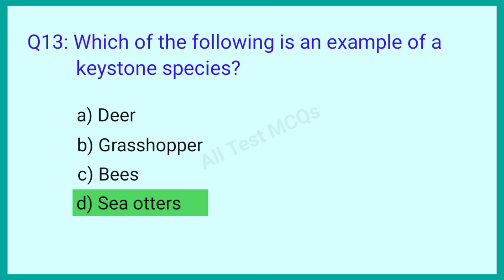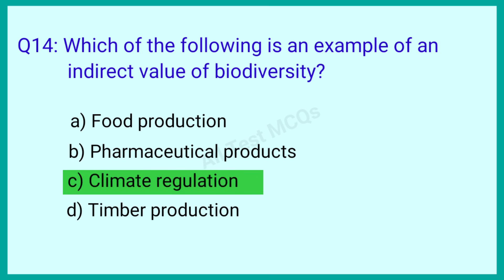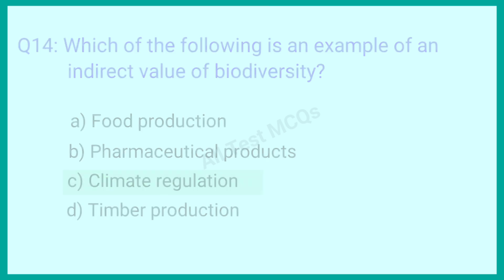Question number 14: Which of the following is an example of an indirect value of biodiversity? The correct answer is option C: Climate regulation.